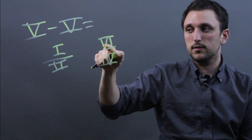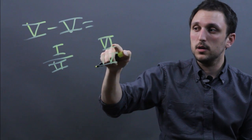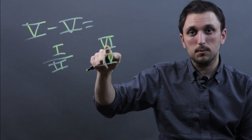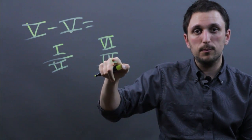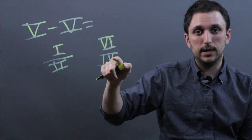The rule is this is a 5 and this is a 1. If the 1, the smaller number, comes after the big number, you add it. But if the smaller number comes before the big number, you subtract from the big number.